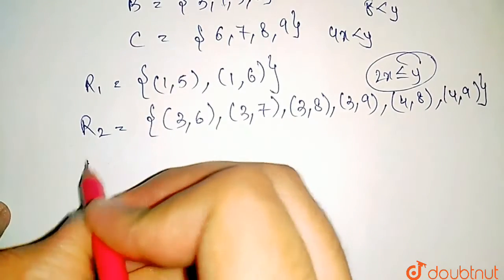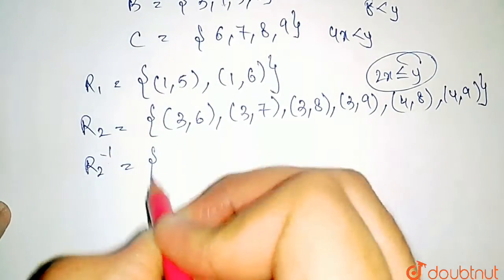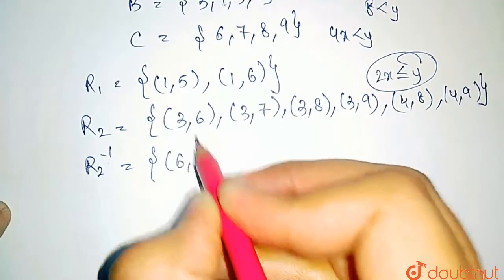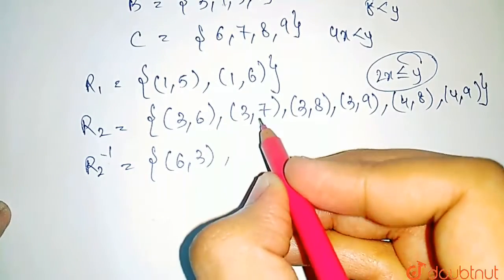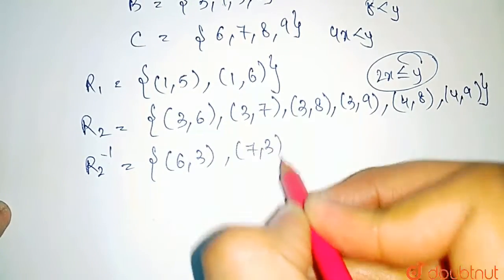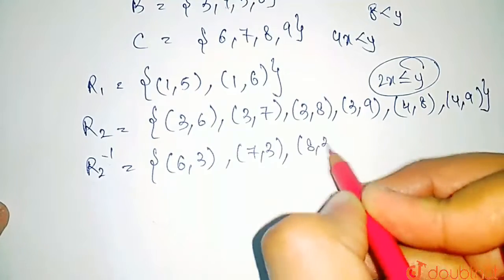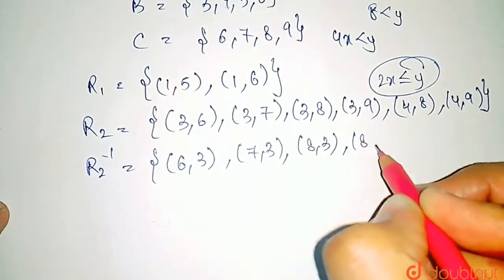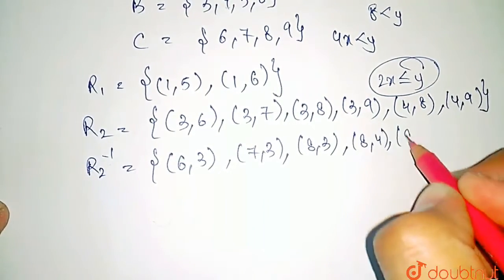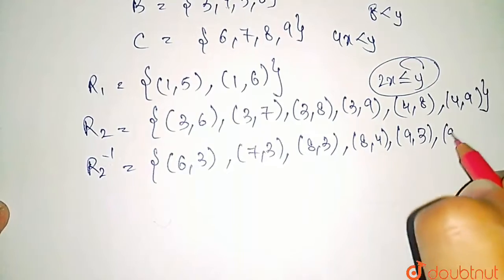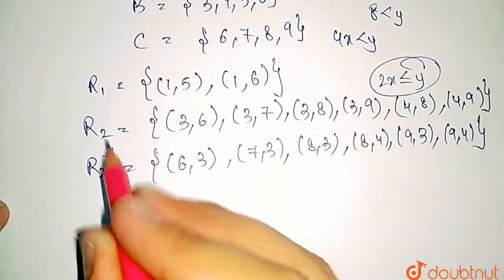Now let us try to write R2 inverse. That would be equal to inverse of all the elements. So (3,6) will become (6,3). This would become (7,3). This will become (8,3). This is (8,4). This is (9,3) and (9,4). This is R2 inverse.